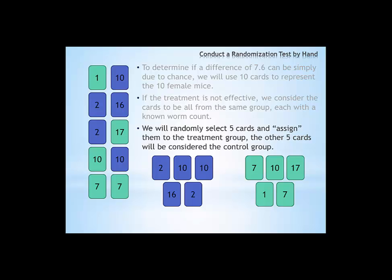By doing this we take the treatment group and the control group, calculate the averages, and in this randomization we found that the difference between the treatment and control was only 0.4. That's much smaller than the difference we observed of 7.6. Well let's try it again.